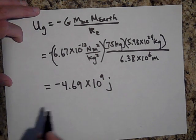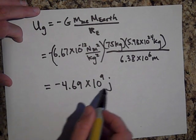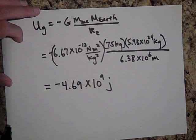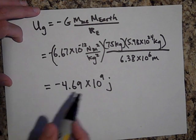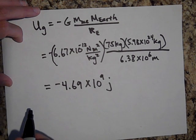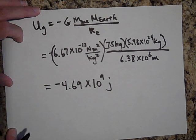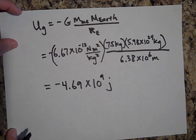And if I wanted to be free from the Earth, you'd have to give me this much energy, but in a positive value, in the form of kinetic energy. If you gave me 4.69 times 10 to the 9th joules of kinetic energy, that would be a lot of kinetic energy. I would never come back to the Earth. I could be shot up and never come back to the Earth. That's the minimum amount of energy I would need to leave the Earth.